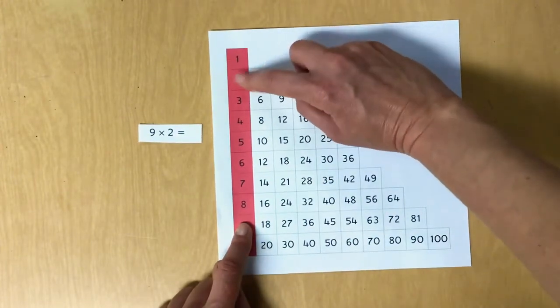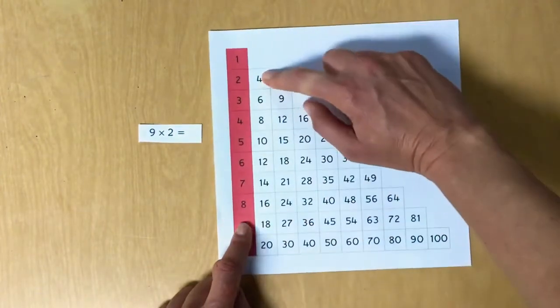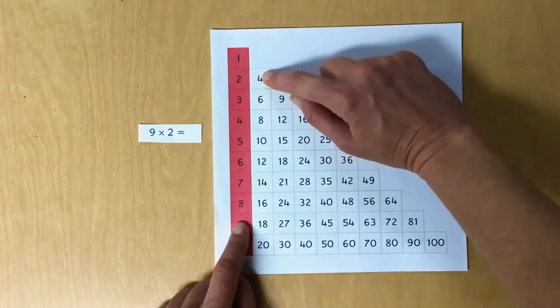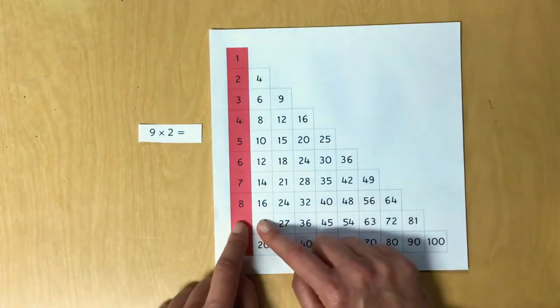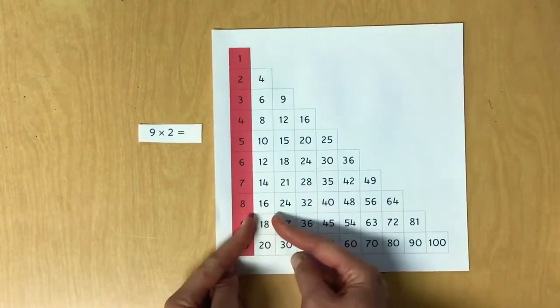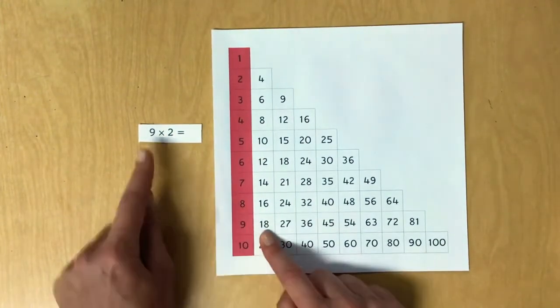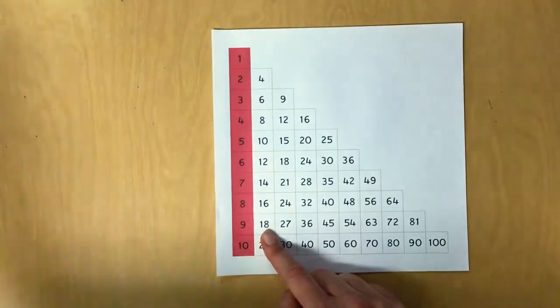Yeah, we slide the finger on the smaller number first. Oh look, it can't go any farther. Now we're going to slide it all the way down till we get to the row with this finger, and slide this one across and open the window. It's 18. Nine times two equals 18. Let's do another one together.